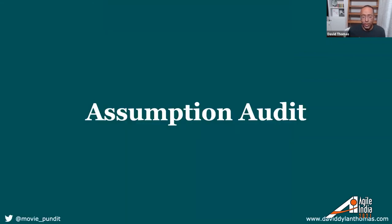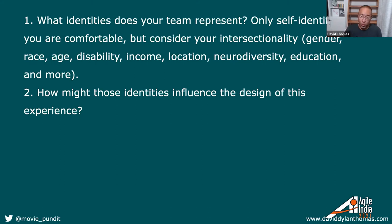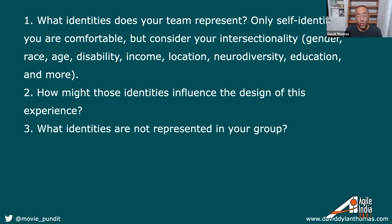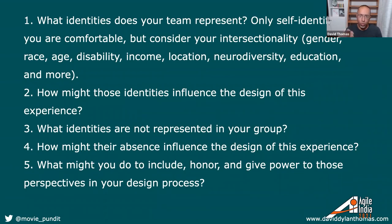Another tool is called an assumption audit — a good way to get all your biases out on the table before you begin a project. You get your team in a room and ask five questions before you begin: One, what identities does your team represent, thinking about things like gender, age, or income? Two, how might those identities influence the outcome of what we're working on? Three, who's not in the room? Four, how might that lack of perspective compromise the design? And five, most importantly: what might we do to include, honor, and give power to those voices during the design process? I choose those words carefully — include: talk to people; honor: maybe pay them for their time; give power: are people impacted by this work who have no say in how it turns out, and how do we give them more say? Because they have to live with what we build.